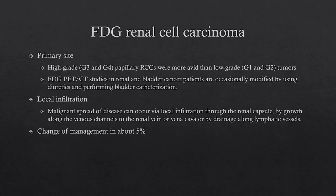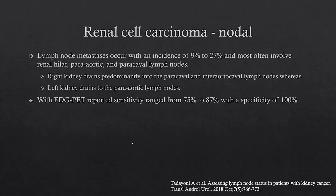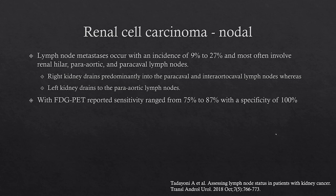Looking at FDG imaging of renal cell carcinoma: the primary site typically shows more uptake with high-grade papillary renal cell carcinomas compared to low-grade tumors. Some centers use different protocols including diuretics or catheterization for patients with renal cell and bladder cancer. Malignant spread can occur through the renal capsule or along the renal vessels. FDG can change management in RCC in about 5% of patients. For nodal disease, metastases occur in about 9% to 27% of patients, typically to the renal hilum, paraaortic, and paracaval lymph nodes. The right kidney drains to paracaval and interaortocaval lymph nodes; the left kidney drains to paraaortic lymph nodes. Literature has reported FDG sensitivity of about 75% to 87% and a high specificity of 100%.